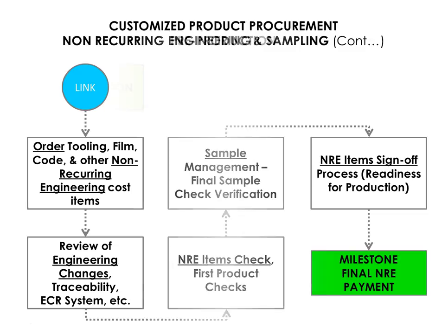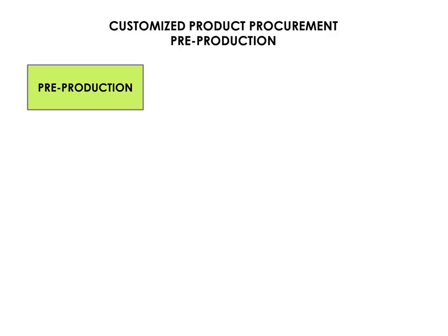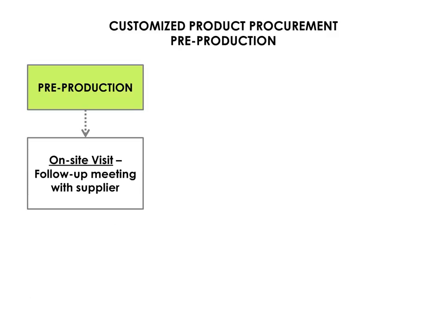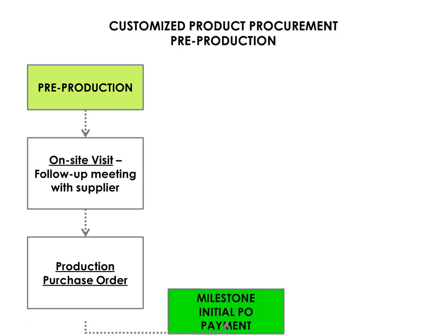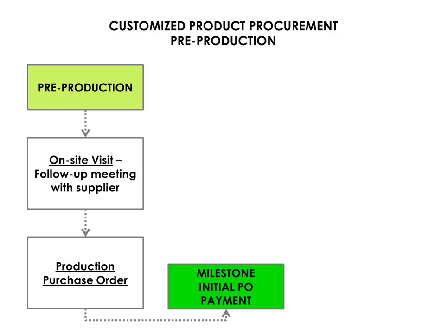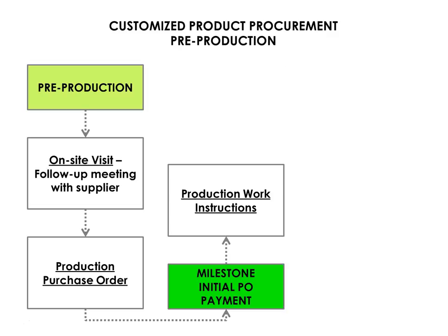Moving on to phase three, the pre-production phase. It is important to have a follow-up meeting with your supplier at this stage for your new product introduction plan. You need to go through the agreement and cover all the critical elements and deliverables as well as setting expectations for production. The next step is to place the order for the initial production quantity, which also means you need to be paying the initial amount against the purchase order. A key aspect of getting product manufactured correctly in mass production is repeatability, and part of that is to have a good set of work instructions.